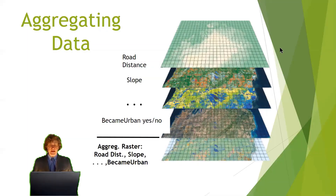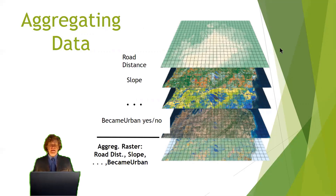Now that we have these new layers — road distance, slope, and so on — including our 'became urban yes or no' layer, we have to aggregate all these layers into one. You can think about drilling through all the raster cells all the way to the bottom, collecting the data, and writing them down.